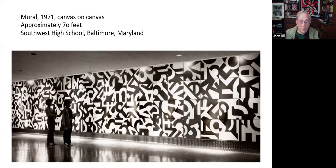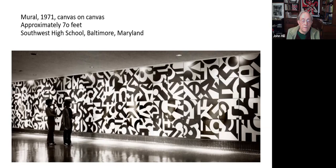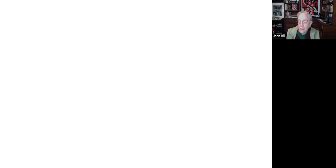This is a mural in a high school in West Baltimore, Maryland — it's 70 feet long. It was just amazing to see this thing; I had seen smaller sketches, but to see 70 feet all lined out and beautifully illuminated was such a treat to find it there. We only saw two or three murals here, but there was a whole body of work about murals.